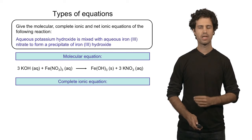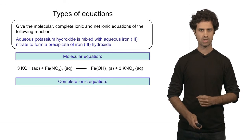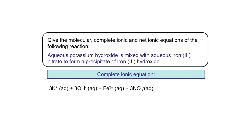In the complete ionic equation we show all the ions present in the solution explicitly. On the reactant side we find potassium ions, hydroxide anions, iron ions, and nitrate anions. Note that we have 3 nitrate anions for each one iron 3 plus — pay attention to the stoichiometry. On the product side we find potassium ions, nitrate ions, and the precipitate, which is again a solid and a single compound.